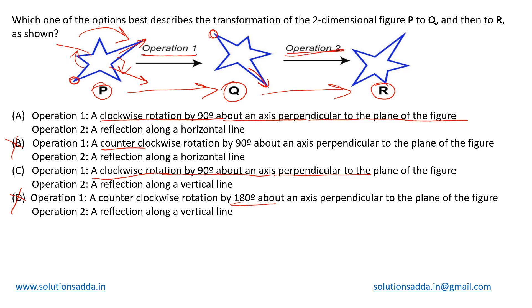Next, let us move on to check this operation 2, how we can convert figure Q into figure R. Here we can see the longest leg is pointing to the southeast direction in Q.